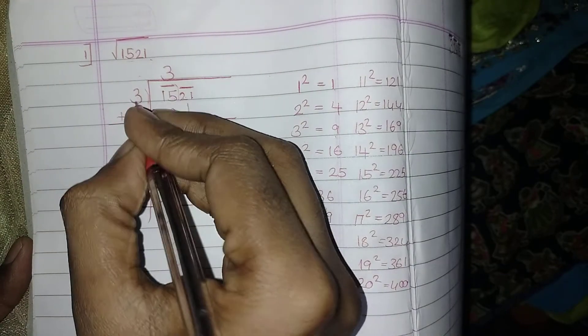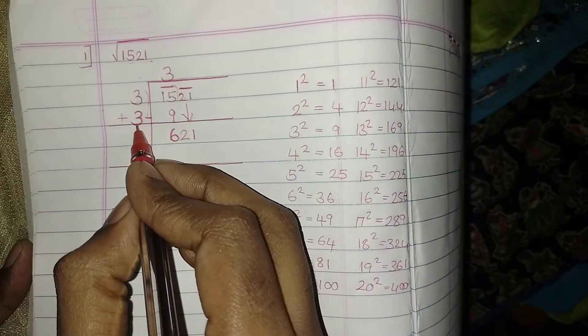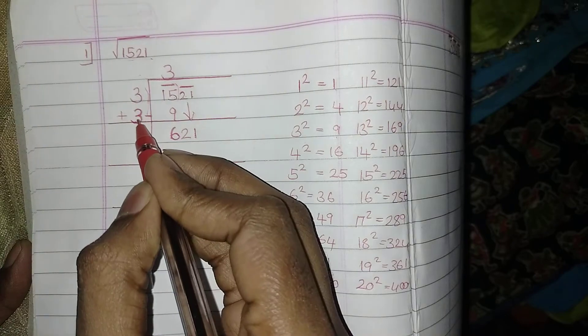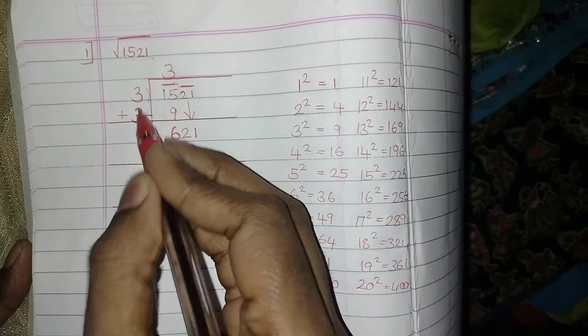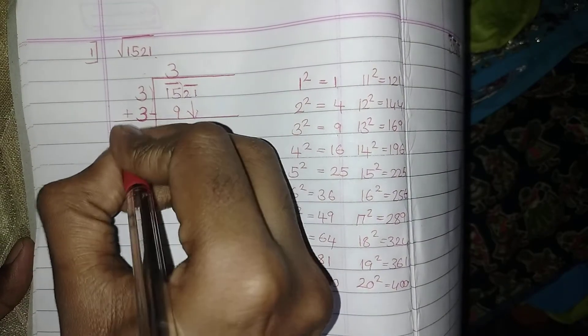Then simultaneously, what I am going to do is that in the left corner, I am just going to add these numbers what I have written. How do I got this 3? Whatever I am writing here, the same should be written below also. So I am just going to add this: 3 plus 3 is 6.